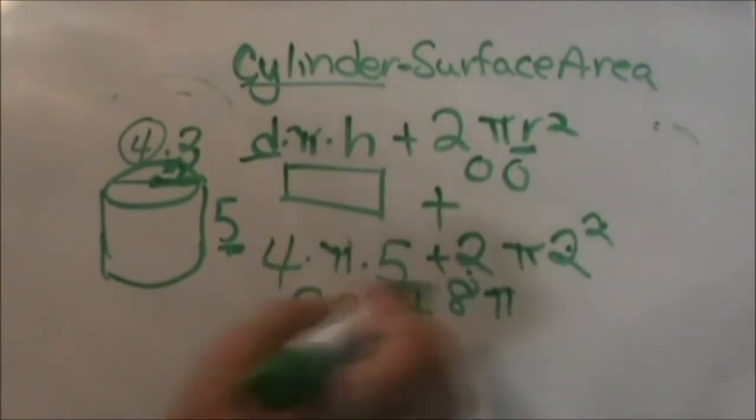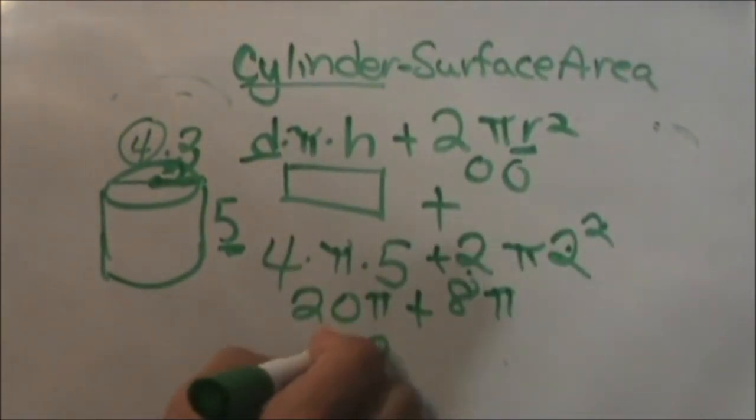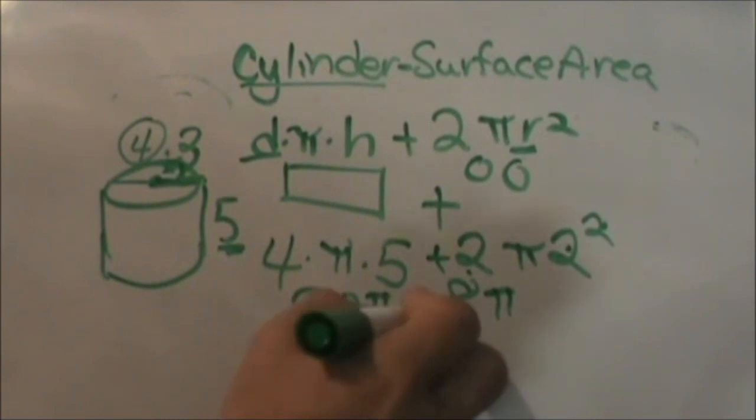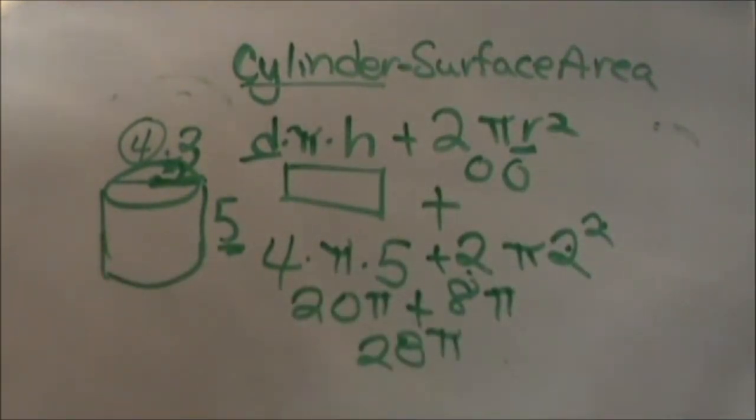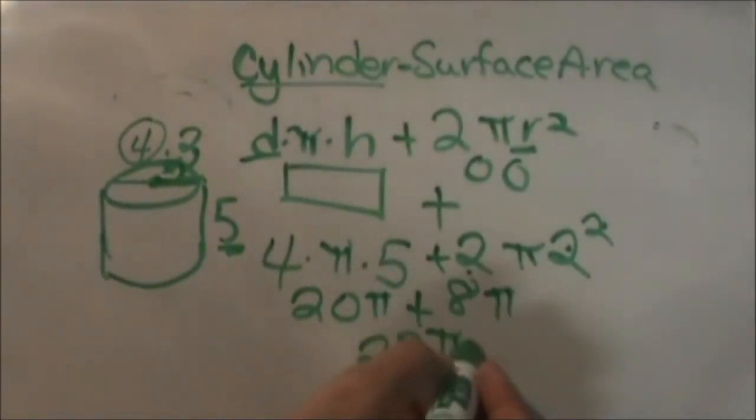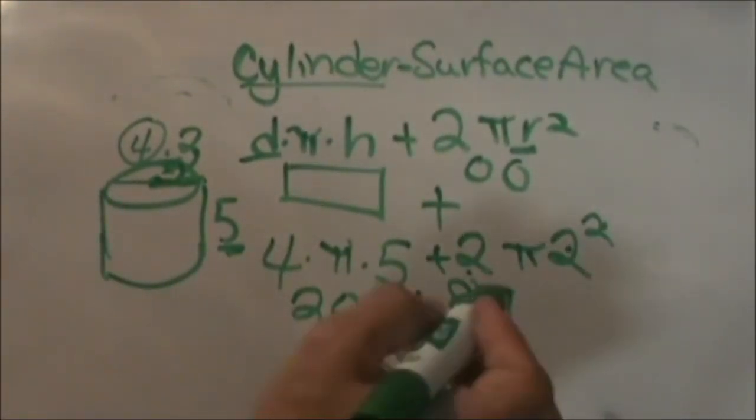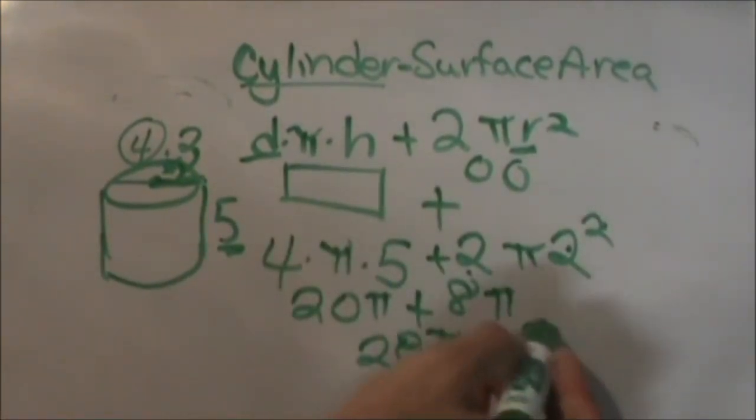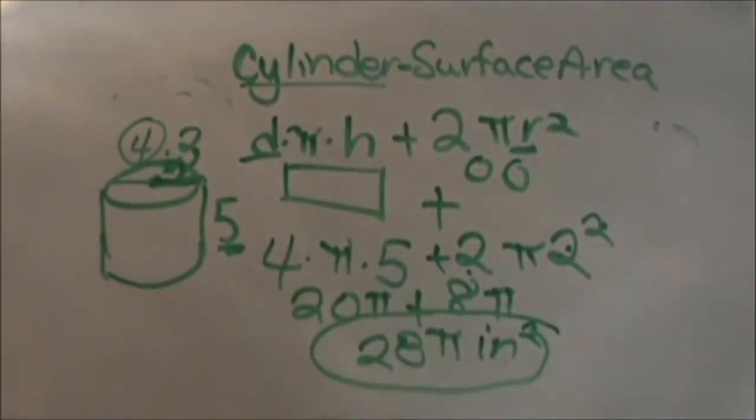And 8 and 20 add to 28, and then you just stick the pi next to it. So that's how you find the surface area. Now remember, area is always 2 dimensional, so I'm going to put units or inches, centimeters, whatever, it is squared, because area is 2 dimensional.